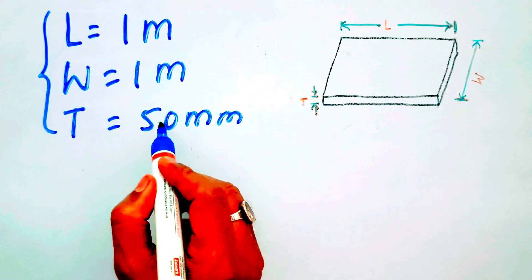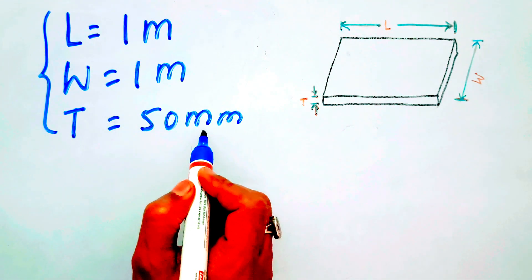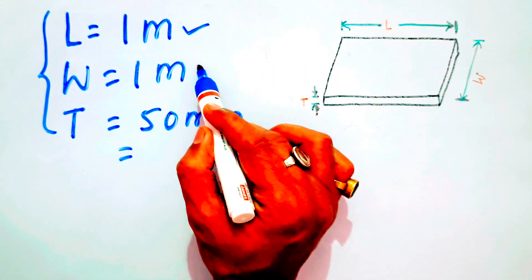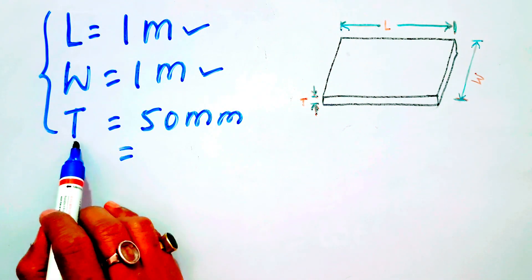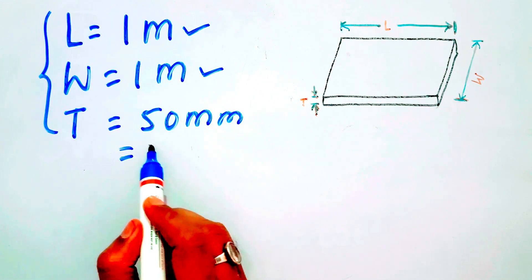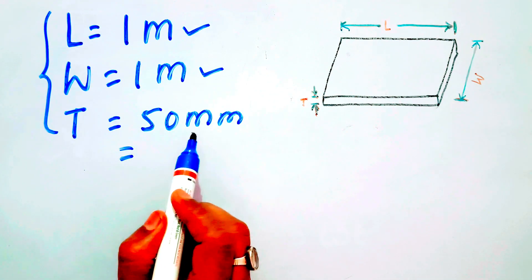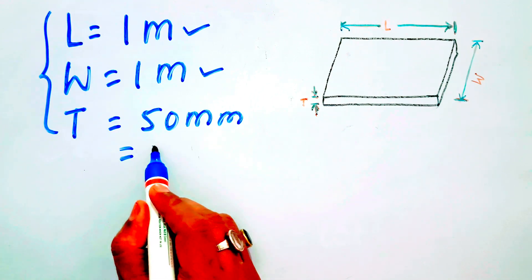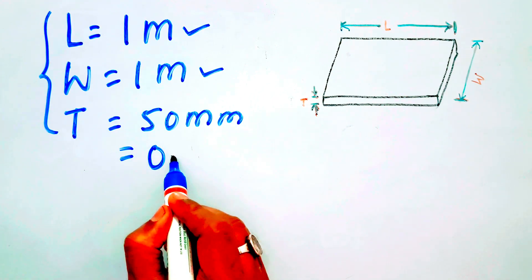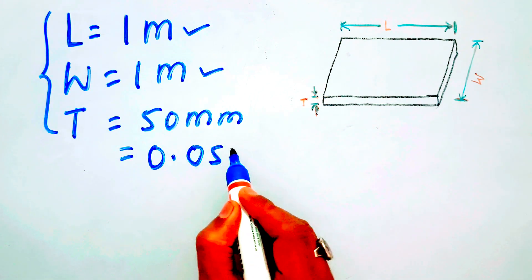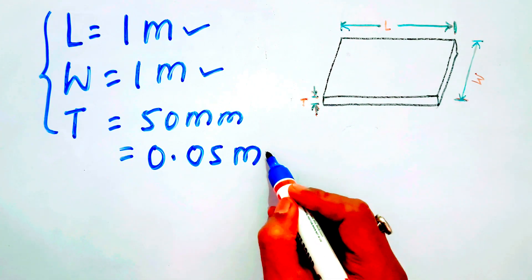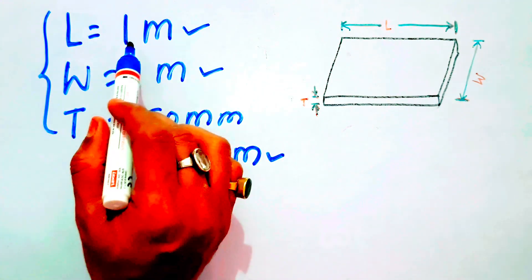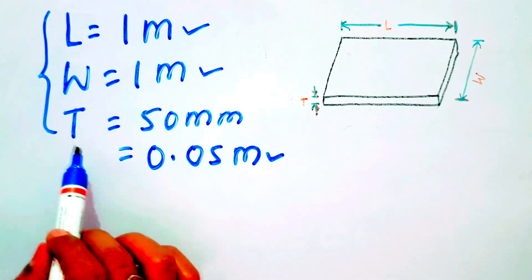First, we will convert 50 mm into meters. The length and width are already given in meters, so we must convert the thickness to meters as well. 50 mm divided by 1000 gives 0.05 meter. Now all dimensions are in meters: length is 1 meter, width is 1 meter, and thickness is 0.05 meter.